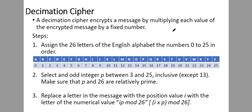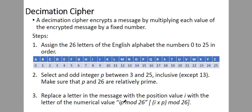The next crypto system is the decimation cipher. A decimation cipher encrypts a message by multiplying each value of the message by a fixed number. The steps are: first, assign numbers from 0 to 25 to each letter — same as the Caesar cipher. Then select an odd integer P between 3 and 25 inclusive, except 13, because 13 and 26 share common factors. Make sure P and 26 are relatively prime. Then replace a letter at position i with the letter of numerical value i times P mod 26.